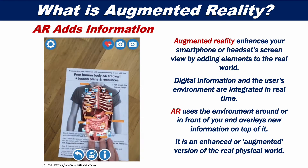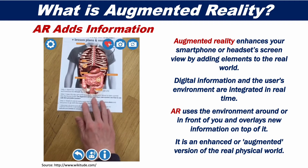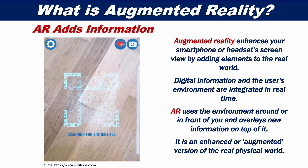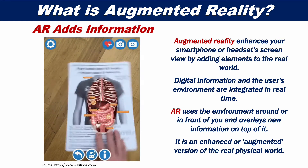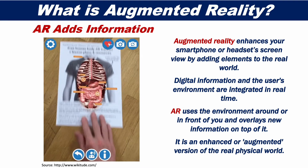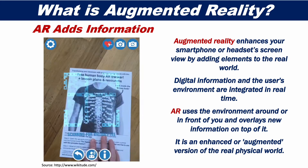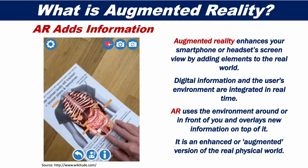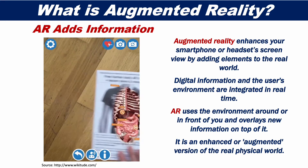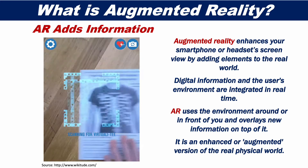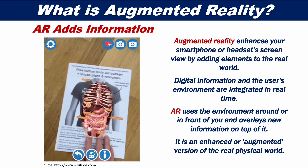Augmented reality enhances your smartphone's screen or headset's view by adding elements to the real world. Digital information and the user's environment are integrated in real time. AR uses the environment around or in front of you and overlays new information on top of it. It is an enhanced or augmented version of the real physical world.